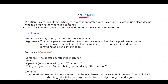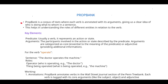You can call it PropBank or you can call it Propositional Bank — both are the same. In short we are calling it PropBank. PropBank is a corpus of texts where each verb is annotated with its arguments, giving us a clear idea of who is doing what to whom in a sentence.